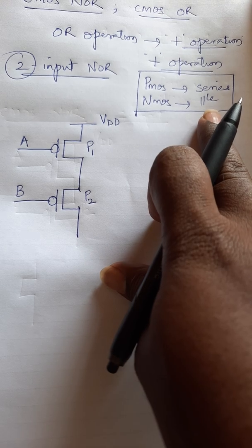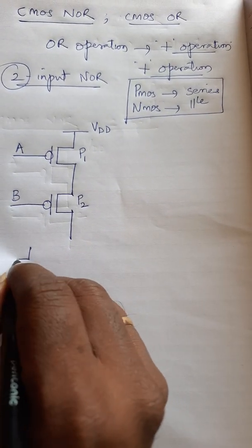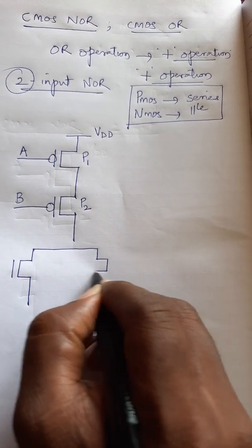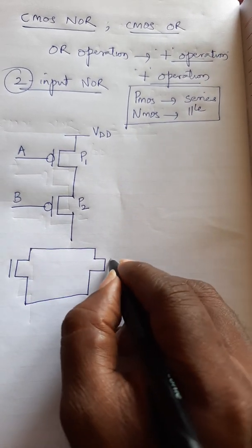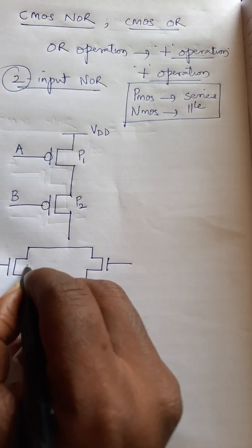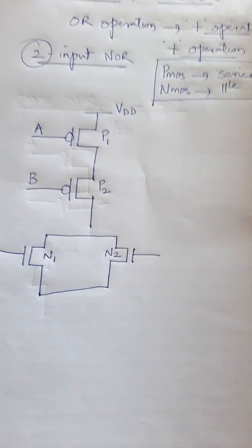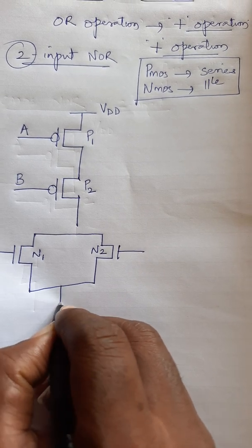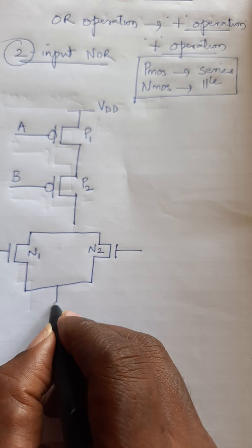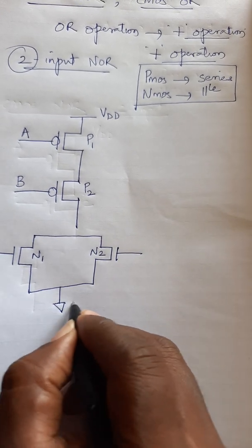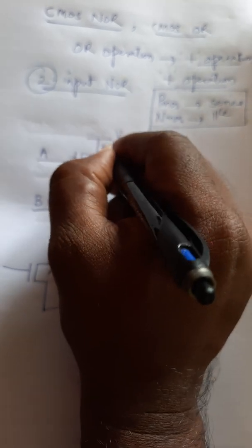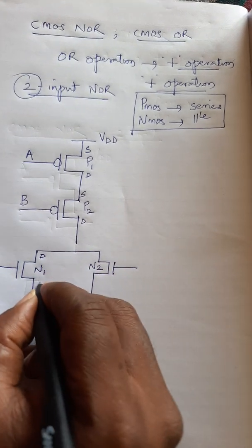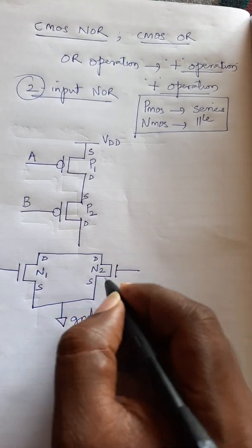The NMOS should be connected in parallel. So I will draw one NMOS in parallel with another NMOS to complete this setup — N1 and N2. The source terminal of the NMOS should be connected to the ground terminal. This is the source and drain of PMOS. Similarly, this is drain of N1, source of N1, drain of N2, and source of N2.